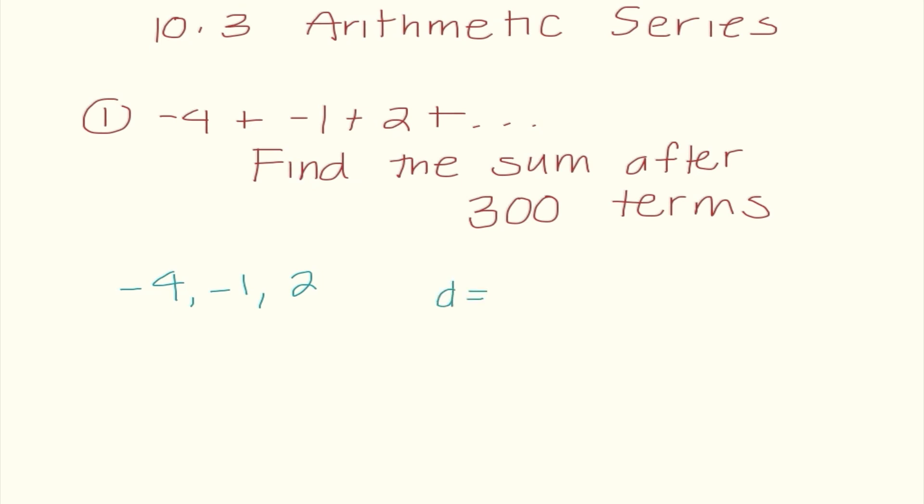We can see that our common difference is any term minus the previous term. So negative 1 minus negative 4 is 3. So it does look like it is arithmetic. The problem is, not only would I need to find all 300 terms of the sequence, but then I would need to add them all together, which would be a giant waste of time. So there must be a better way.